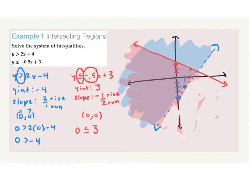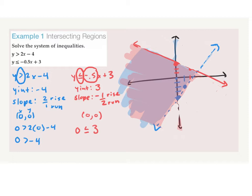Our answer is only the purple part — that's all we want. We erase the blue and the red, and only look at what's overlapping. We don't want anything else.